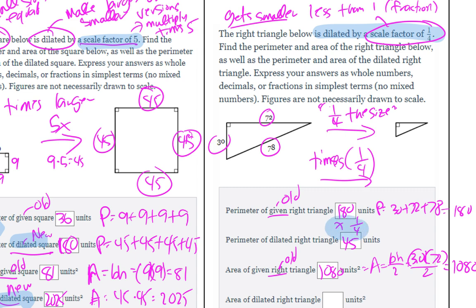For the dilated area, we don't just multiply by one-fourth — we multiply by one-fourth squared. So the dilated area is 1080 times one-fourth squared, which gives us 67.5. That's the critical difference: area uses the squared scale factor.